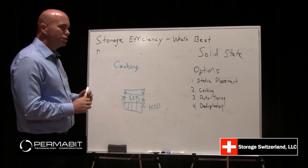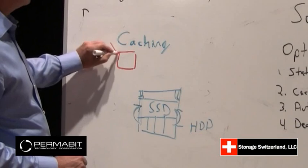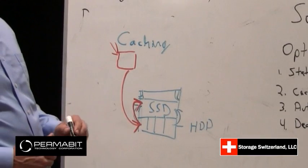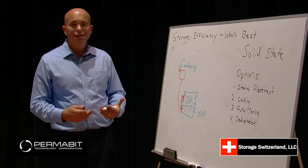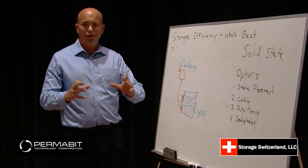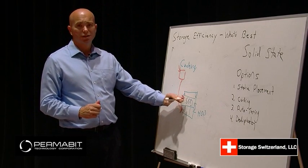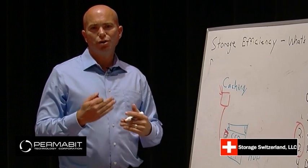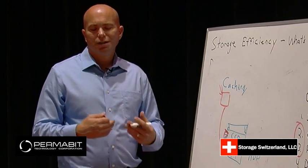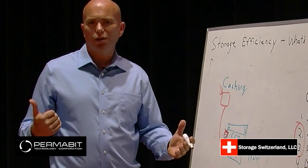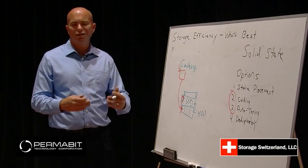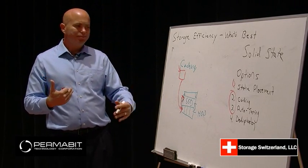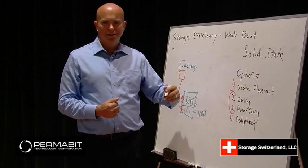The challenge with automatic tiering is most systems we've seen today, when the server writes new data, it always goes to hard drive first and then has to promote itself back up to solid state. That algorithm has to run, and we've seen it take at least hours and in some cases days for data to become hot enough to be promoted up to solid state storage. The big challenge that both caching and auto-tiering have is they create a very high turnover rate into the solid state storage area. Solid state storage can only handle so many writes, and auto-tiering may be turning over the entire cache many times a day.